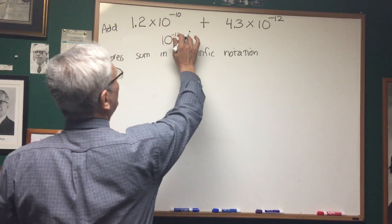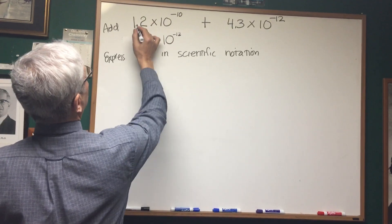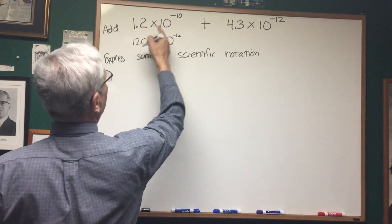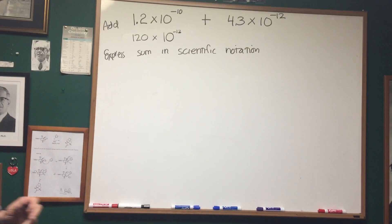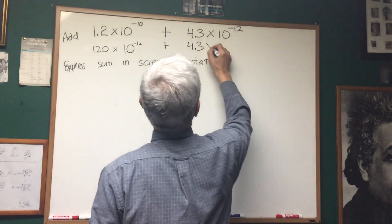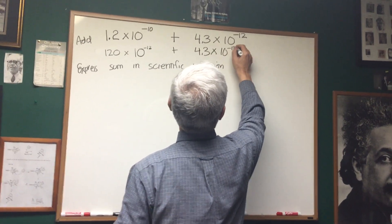We divide by 100 and then multiply by 100 by moving the decimal point two places to the right, and this becomes 120 times 10 to the negative 12th plus 4.3 times 10 to the negative 12th.